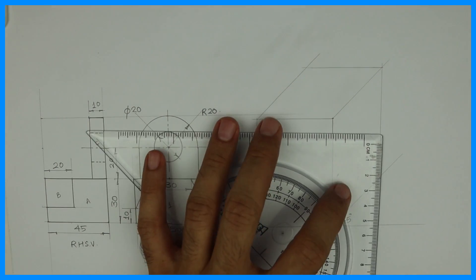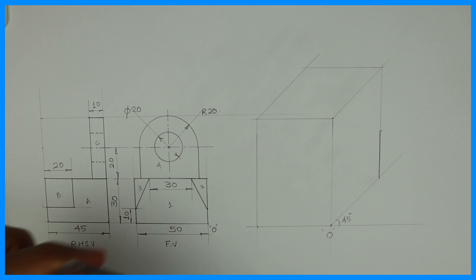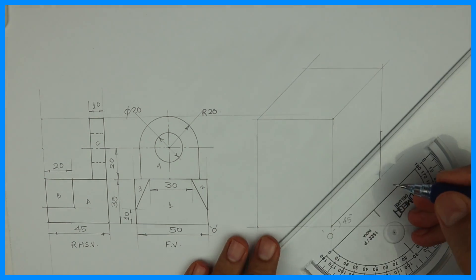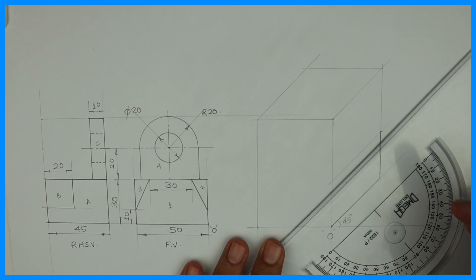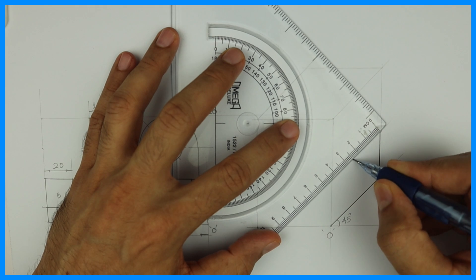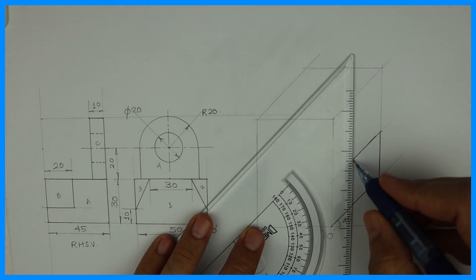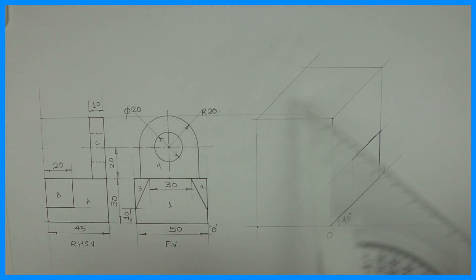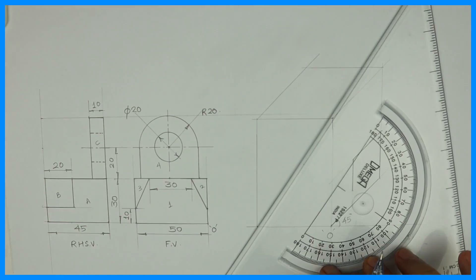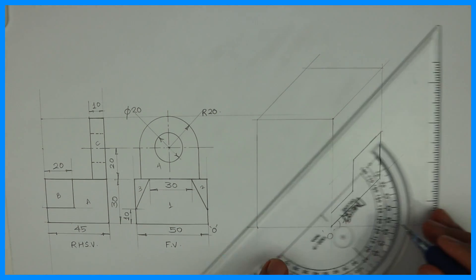We will draw part A. This dimension is 25, then you go down by 20, and from the bottom you take 10. So first you complete part A.